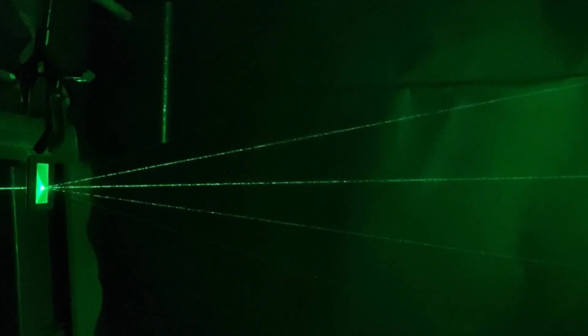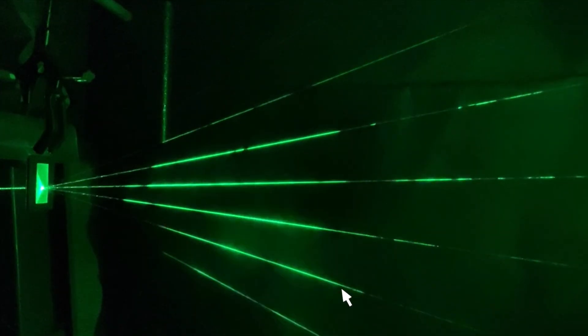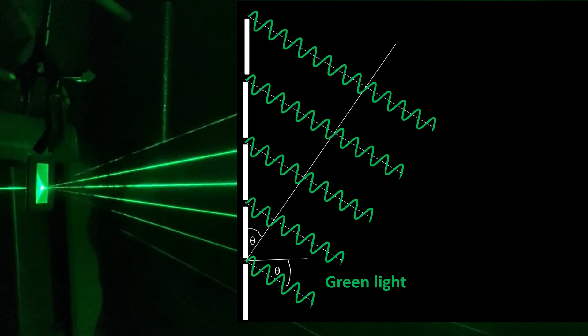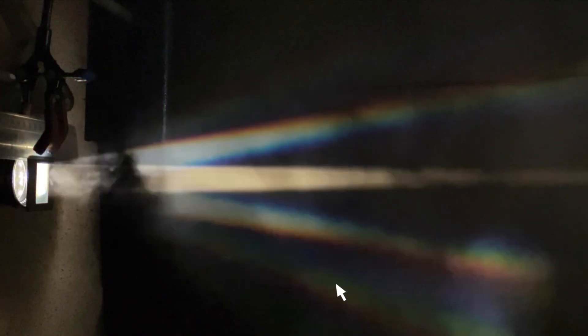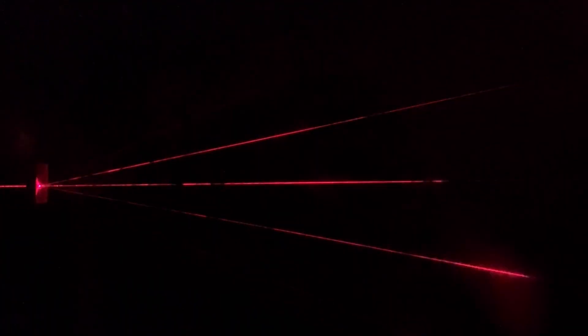But why do we get the higher-order beams like the second-order beam? Well, the second-order beam occurs when the path difference between two adjacent slits is exactly two wavelengths. We can see the higher-order beams clearly with the green laser, and at times with the white light and red laser, but they get dimmer because less light diffracts to these larger angles.